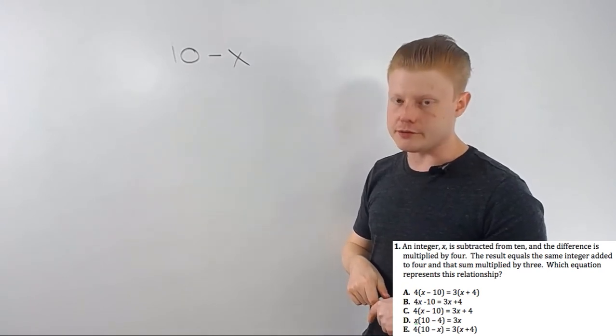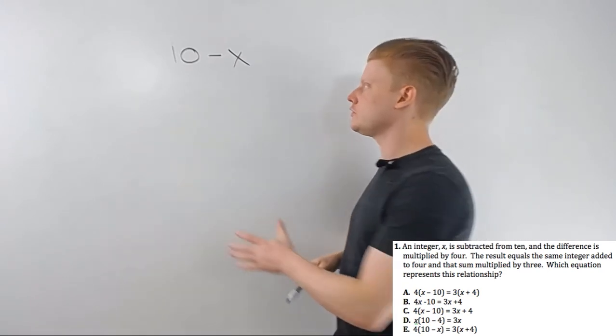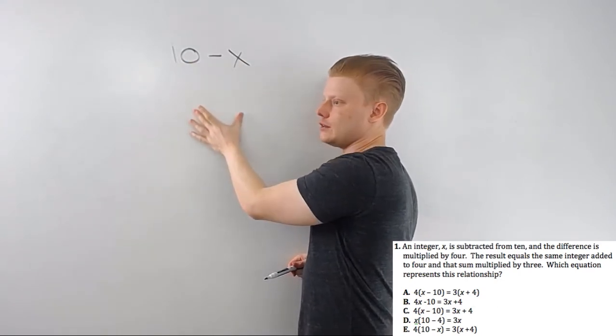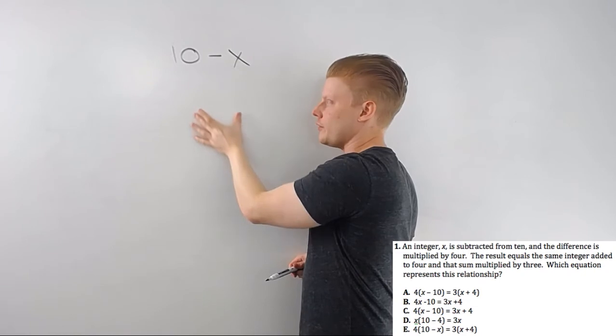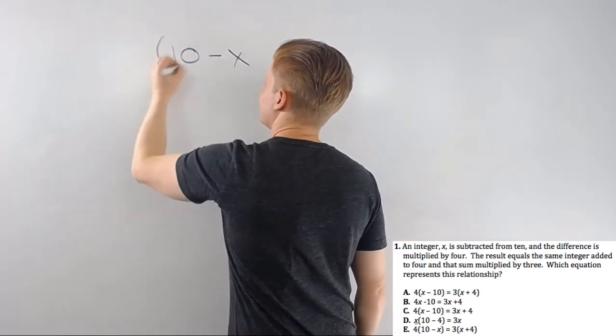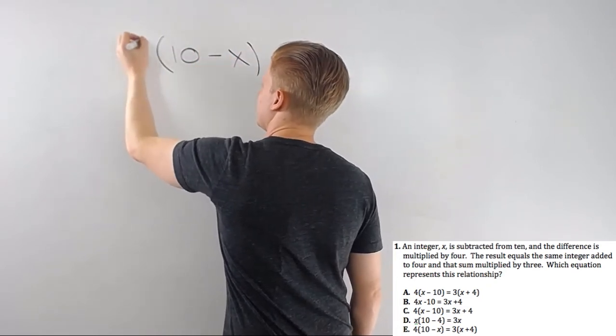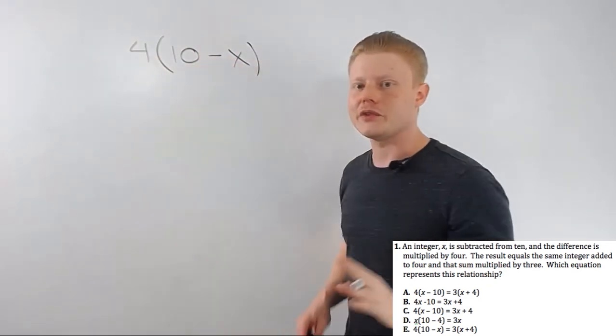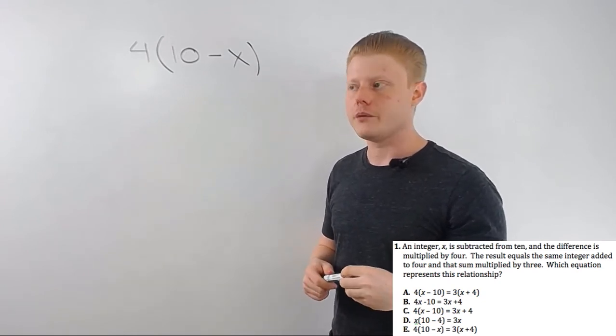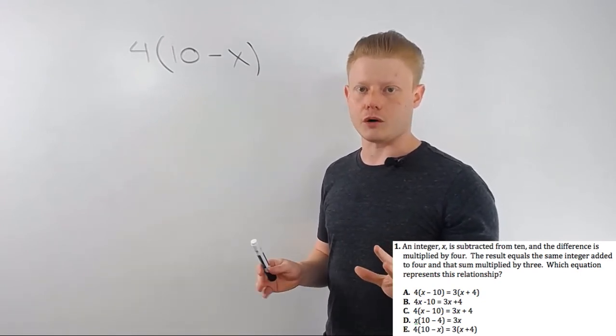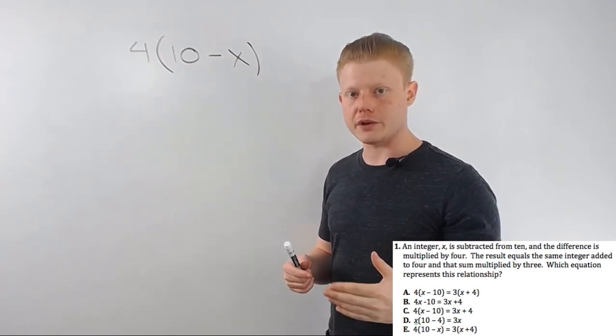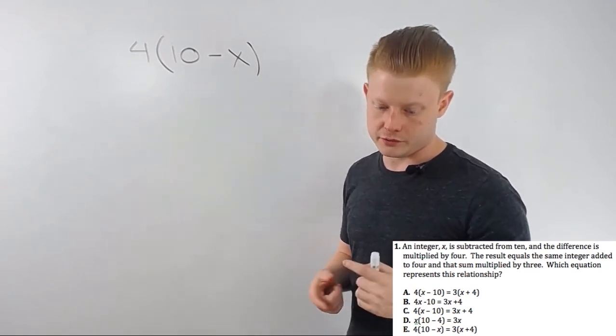Now, the difference is multiplied by 4. Okay, the difference is the result of a subtraction. I can't make this any simpler. So I'm going to multiply this number. This is a single kind of quantity at this point, by 4. At least, I can look at it that way. Now, here's the beauty of this particular problem, and a lot of problems like this. This is actually a great problem to mark off on. So get a couple steps under your belt and then run through your answer choices.